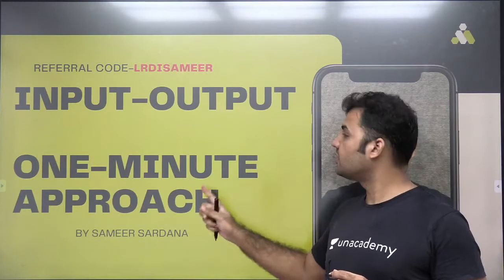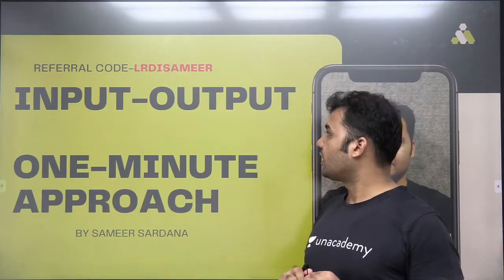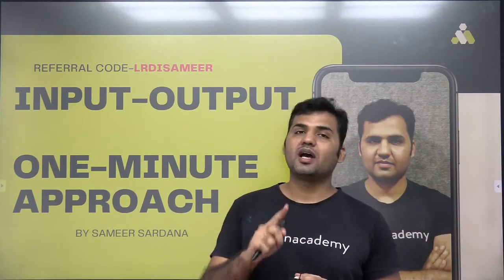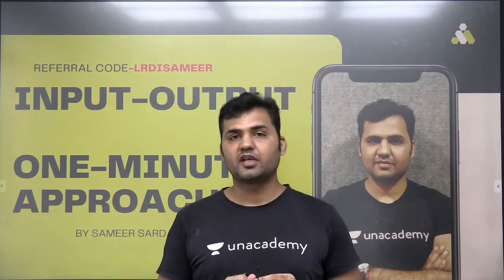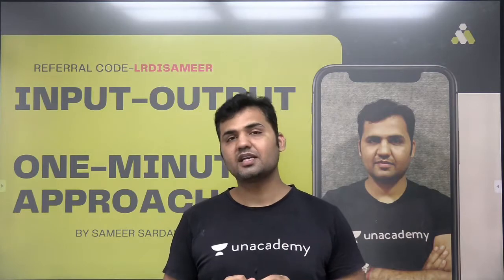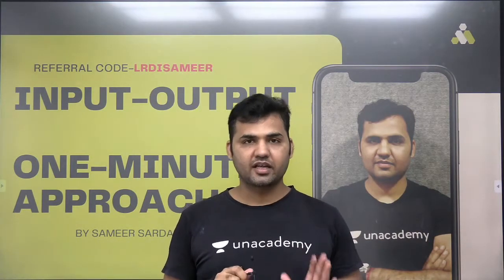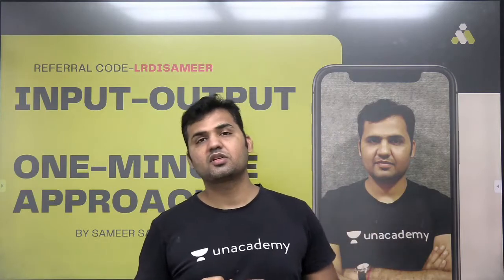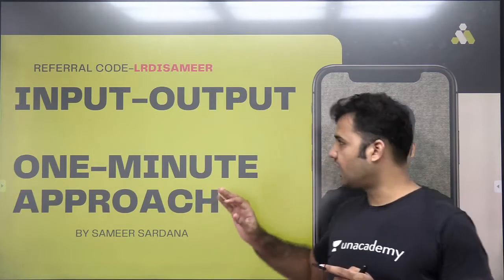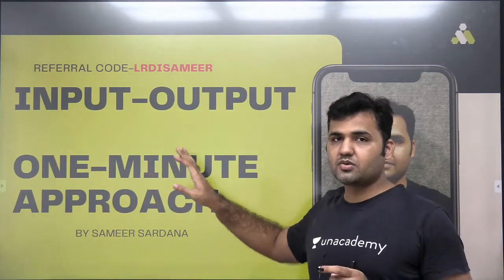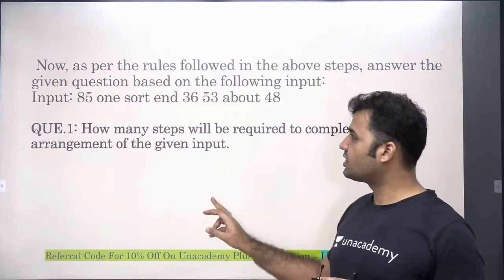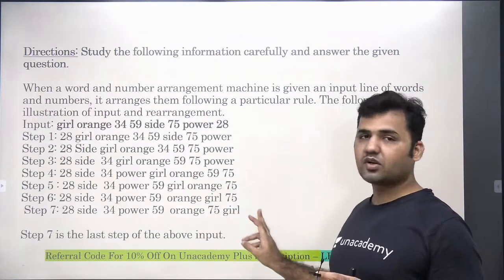Using the ranking method you will be able to solve the question in one minute. In this particular video I will be discussing a set where two elements are moving in one step. In the previous videos we discussed the basic set where one element was moving at a time. But in this set we will be discussing those questions of input-output where two elements are moving at the same time. Please watch the previous two videos before watching this one.